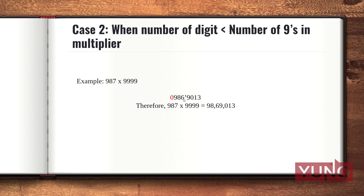Just like Case 1, I will write the 9s complement of this number starting from the leftmost position. 9s complement of 0 is 9, 9s complement of 9 is 0, 9s complement of 8 is 1, and 9s complement of 6 is 3. So after multiplying 987 with 9,999, I got my answer as 9,869,013.